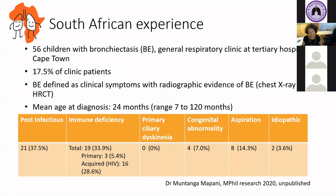Eralp and colleagues from Turkey recently published a comparative cohort showing they halved the amount of idiopathic cases and quadrupled the number of PCD cases compared to a cohort from 15 years ago — likely an example of better understanding and access to investigations. What about the African experience? This data is from Dr. Muntangamapani's MPhil research. She is a paediatrician from Zambia finishing her subspecialist training in Cape Town. She looked at bronchiectasis in 56 children attending a general respiratory clinic over one year, which represented 18% of clinic patients — so it is a common cause of chronic respiratory illness. Bronchiectasis was defined by clinical symptoms and radiographic evidence, including chest x-ray or HRCT as assessed by a paediatric radiologist. The mean age of diagnosis was two years.